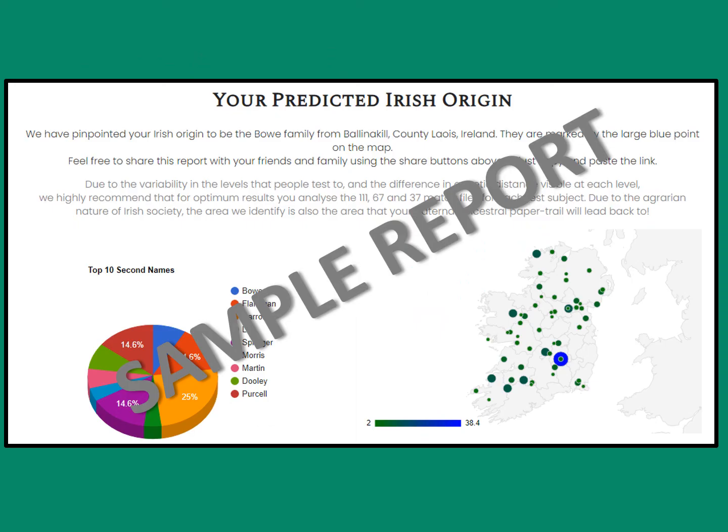Here's a sample report. In this instance, the computer has looked at all the surnames in the YDNA results, identified surnames that recur among the matches, and plotted them all on a map of Ireland. It identifies Ballinakill in County Laois as the origin for the test subject's paternal ancestor.